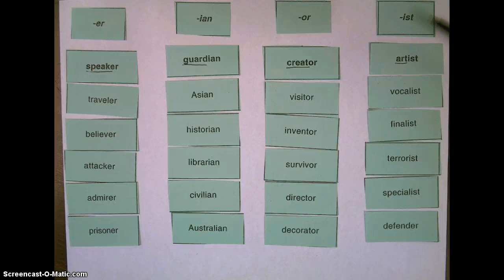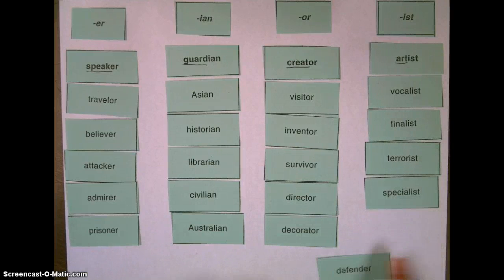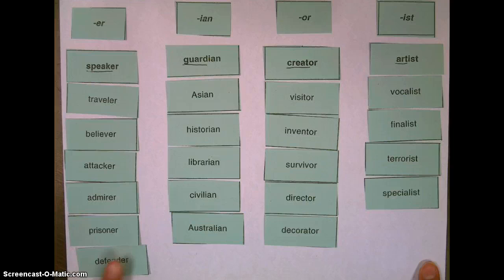And on the IST list, we have artist, vocalist, finalist, terrorist, specialist. Whoops! In this one, I put in the wrong column. Defender is, of course, an er word.